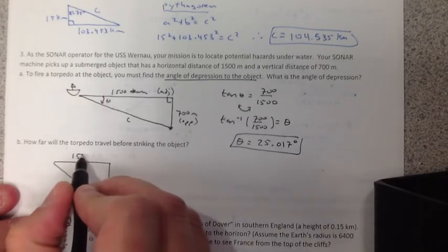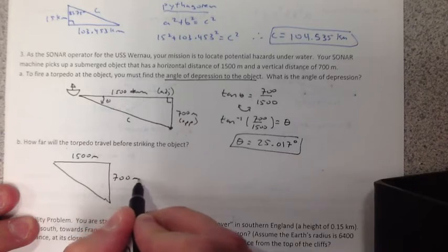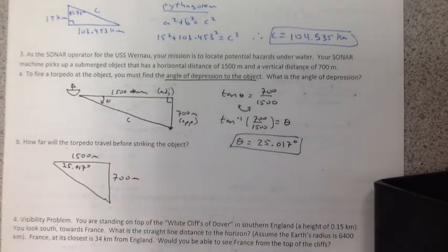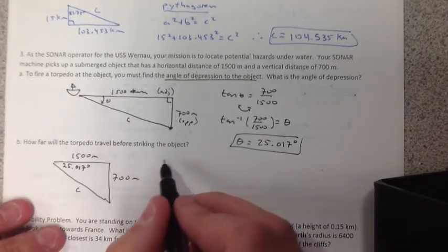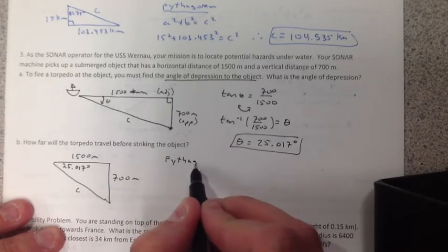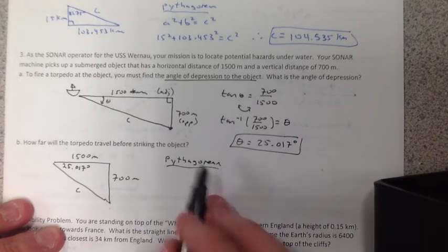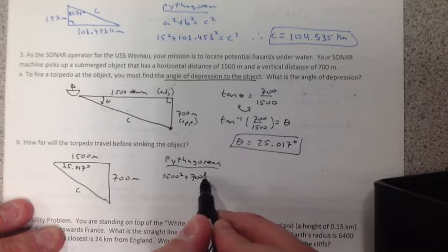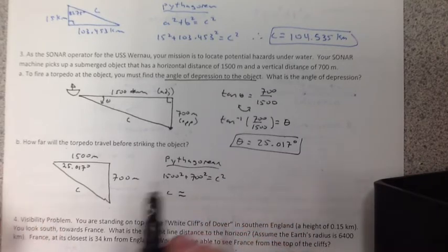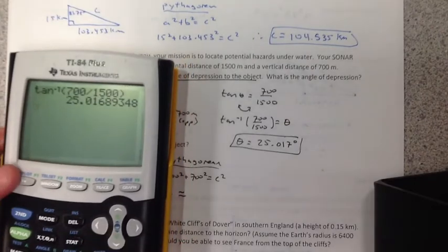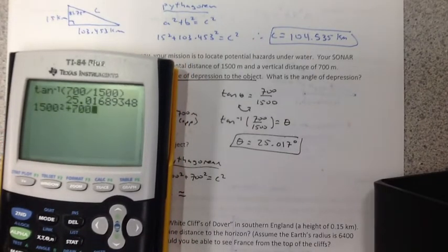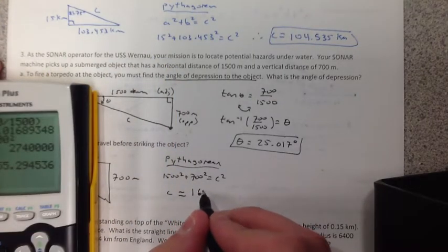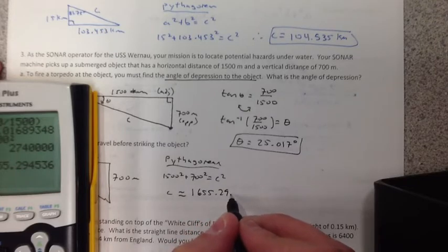We know that's 1,500 meters. That's 700 meters. And we just found this angle will be 25.017 degrees. We're looking for the hypotenuse. The safe side is just to use the Pythagorean theorem. 1,500 squared plus 700 squared equals C squared. And if you do the math, 1,500 squared plus 700 squared, take the square root of that. We get about 1,655.29 meters.